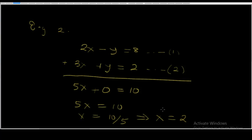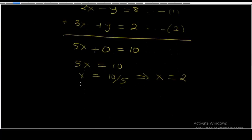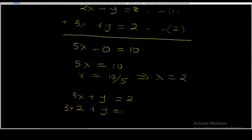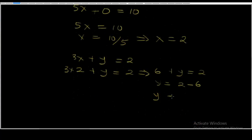Now we know x equals 2. Let's substitute for x in equation 2: 3x plus y is equal to 2. So we write 3 times 2 plus y equals 2. That gives 6 plus y equals 2. So y is equal to 2 minus 6, therefore y equals minus 4. Our answers are x equals 2 and y equals minus 4.